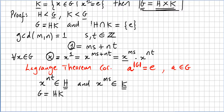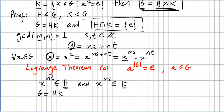Just remember that M and N are relatively prime, so the greatest common divisor is 1. Due to the corollary, X to the power of NT has to be in a subgroup H, and X to the power of MS has to be in a subgroup K. It was easy to prove that they were subgroups, so G has to be equal to HK.